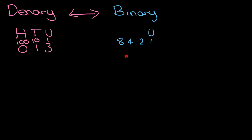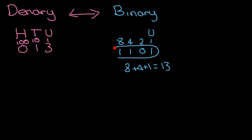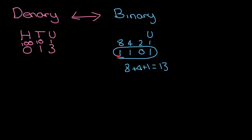If I had 13 sweeties in a jar and I have to represent that, I can do it by making up these numbers using each one just once if need be. So one eight, and one four, and one one is 13. Eight plus four plus one is 13 — that is how I represent 13 in binary. You just keep doubling the number and you can make any single number that you want.